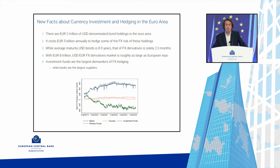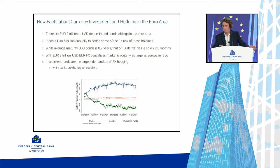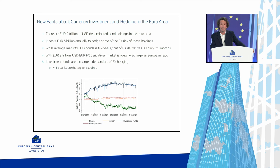Some new facts about currency investment and hedging in the euro area: there are roughly two trillion euros worth of USD-denominated bond holdings in the euro area, and it costs roughly 5 billion euros annually to hedge some of the associated currency risk — that is what the cross-currency basis costs annually. The average maturity of USD bonds is around nine years, while that of FX derivatives is only two to three months, which we exploit through the need to roll over. In size, the USD-euro FX derivative market is roughly as large as the European repo market.